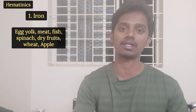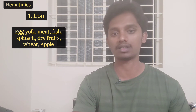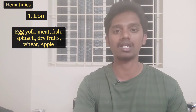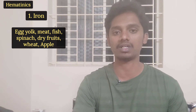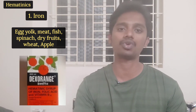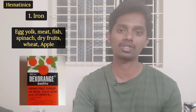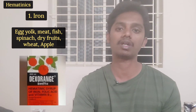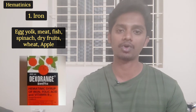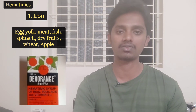Next are the sources of iron. Iron-rich foods include meat items such as chicken, mutton, and fish. Plant-based sources include wheat, apple, and dry fruits. Overall, non-vegetarian foods are particularly rich in iron. These are the natural sources that are rich in iron. Physicians often prescribe iron tonics, especially for individuals who are vegetarian and may lack sufficient dietary iron.